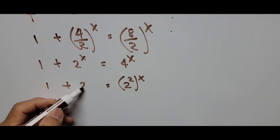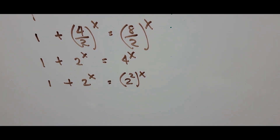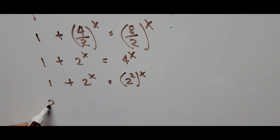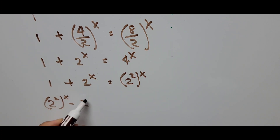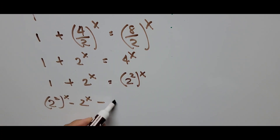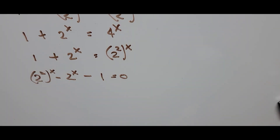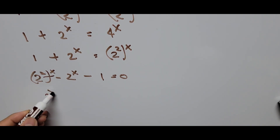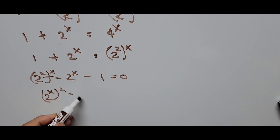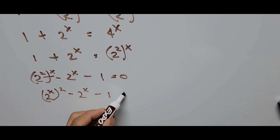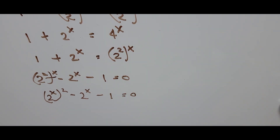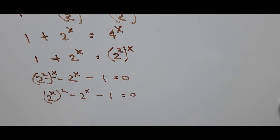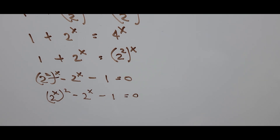The left-hand side remains 1 plus 2 to the power of x. Rearranging the terms, the equation becomes (2^2)^x minus 2^x minus 1 equals 0. Further rearranging, the first term's exponent gives us (2^x)² minus 2^x minus 1 equals 0. The equation now involves two terms with exponentials: (2^x)² and 2^x, so it's transformed into a quadratic equation.